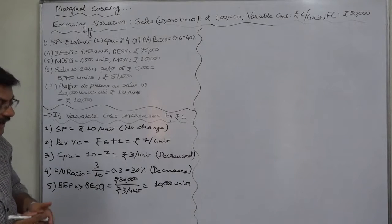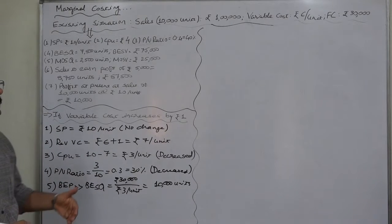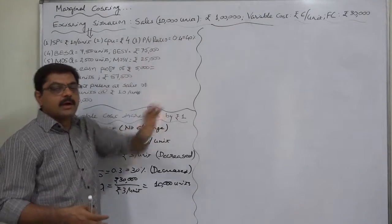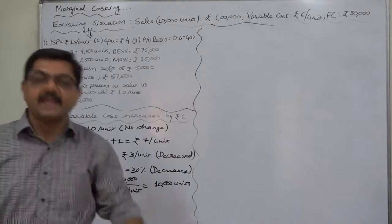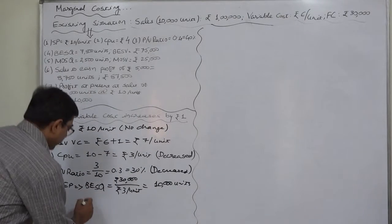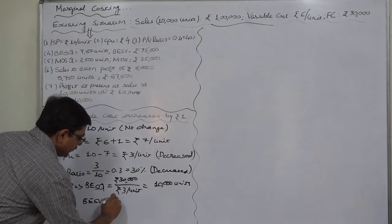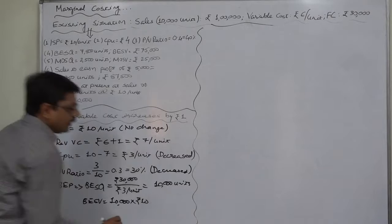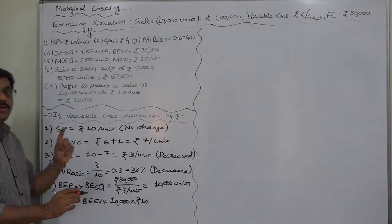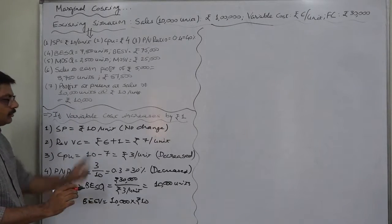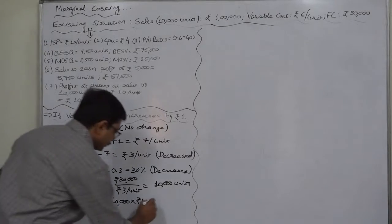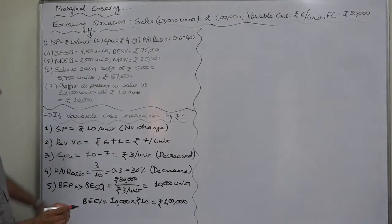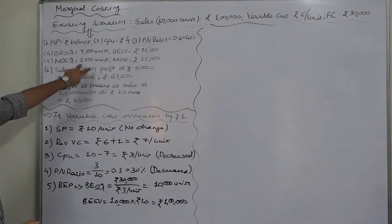Or if the company makes sales in the next period exactly equal to the sales in the existing period, the company will only break even. Breakeven sales value will be 10,000 units times ₹10 selling price. Again, remember, no change in selling price—we have not changed the selling price due to the change in variable cost. So it is ₹1 lakh. But if we compare it with the existing situation,